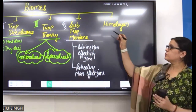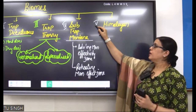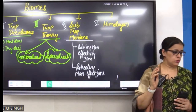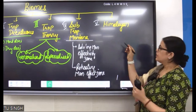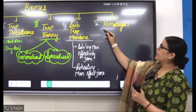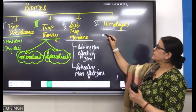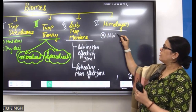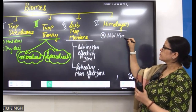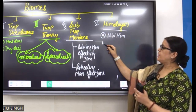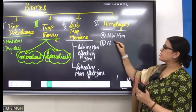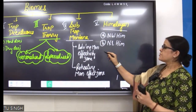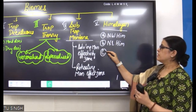And finally, number five: Himalayan. How many categories can we divide Himalayan into? Three — A: North-Western Himalayan; B: North-Eastern Himalayan; C: Trans-Himalayan.